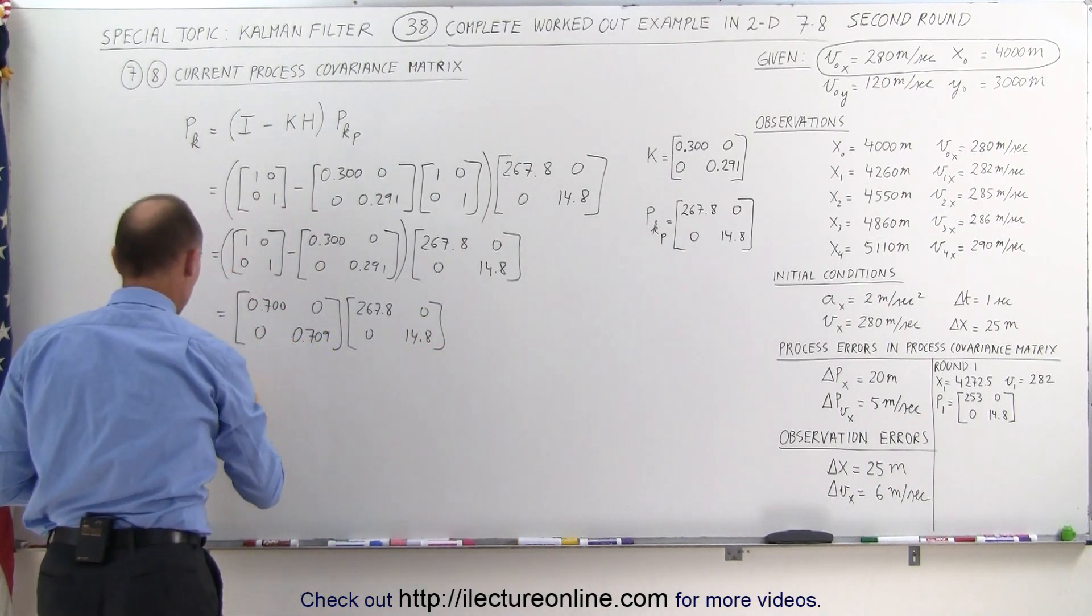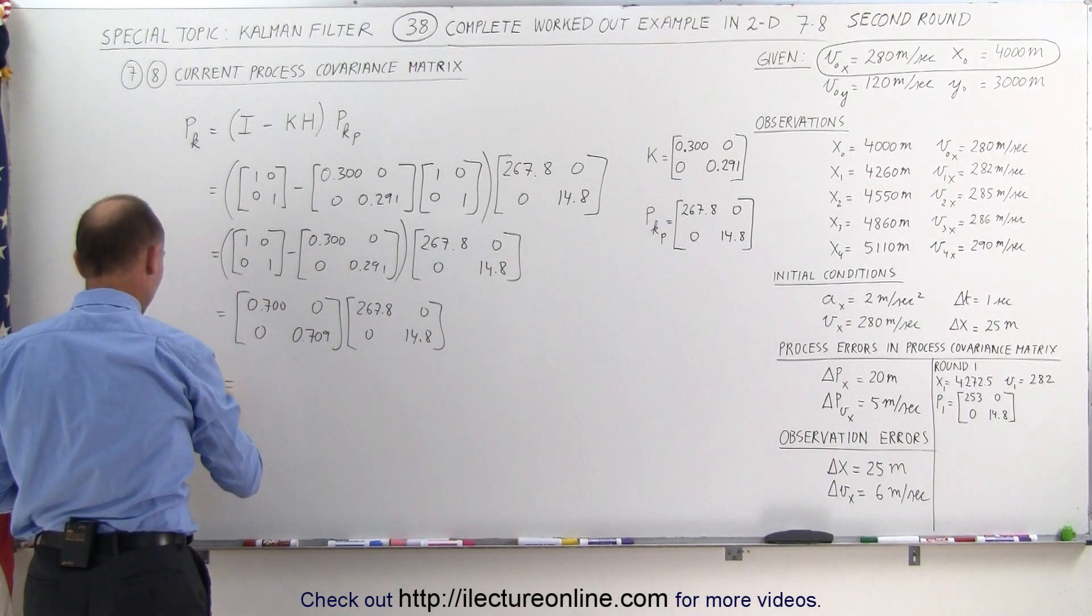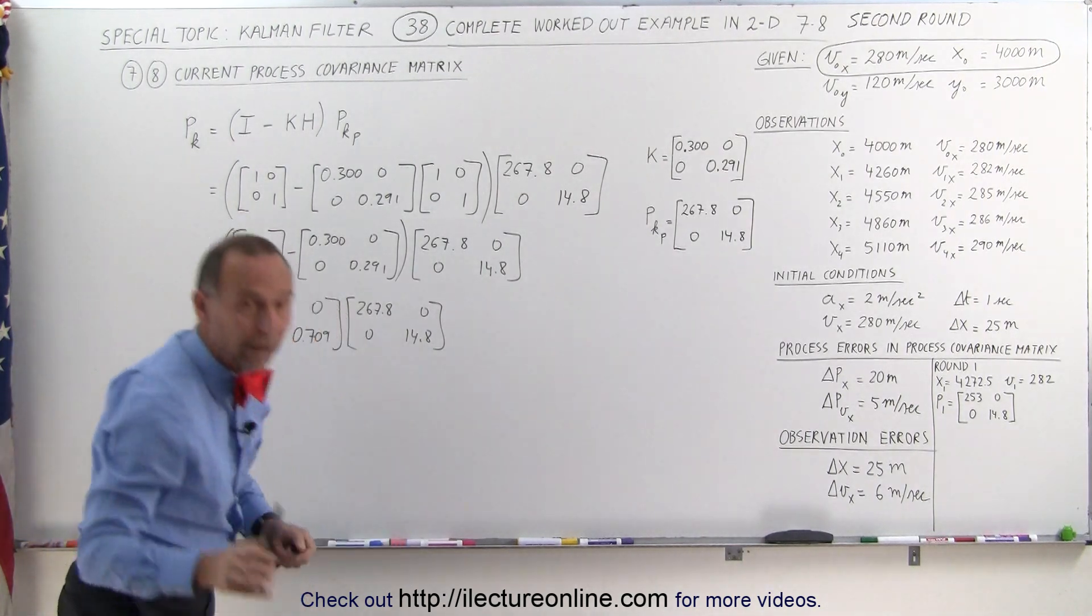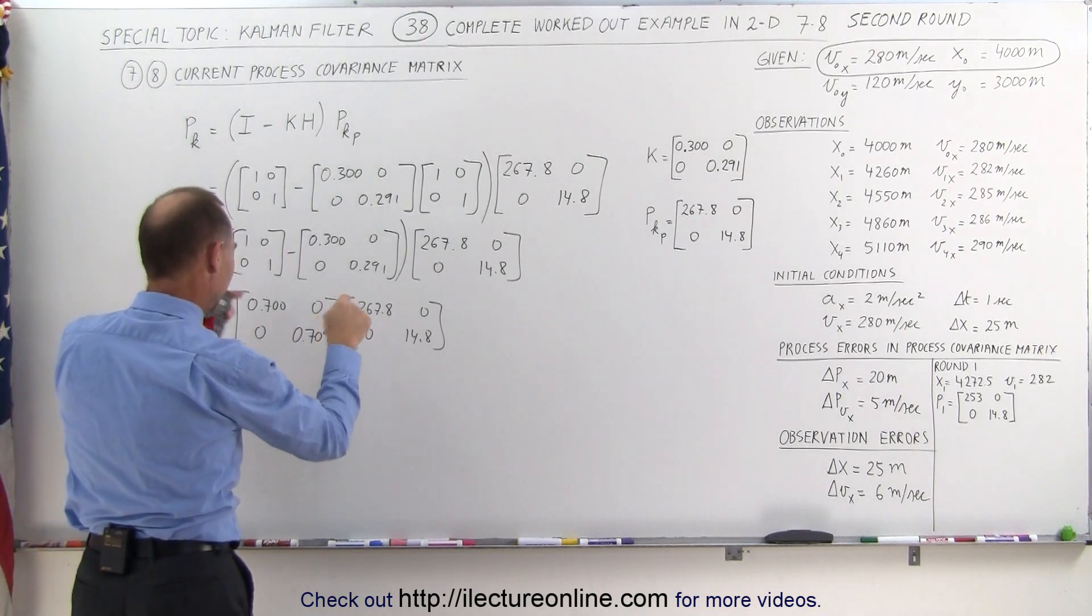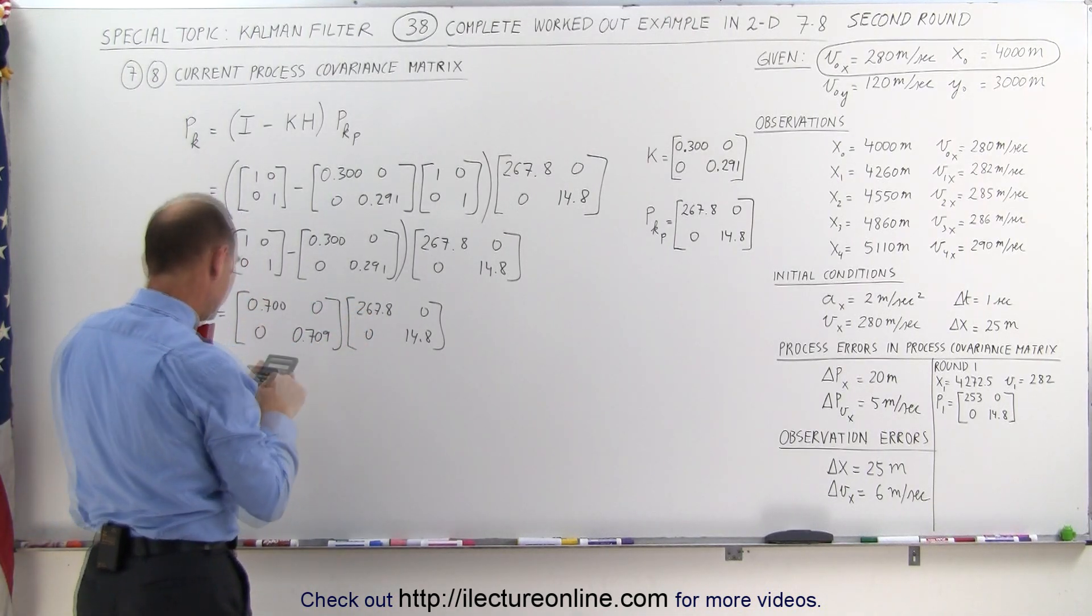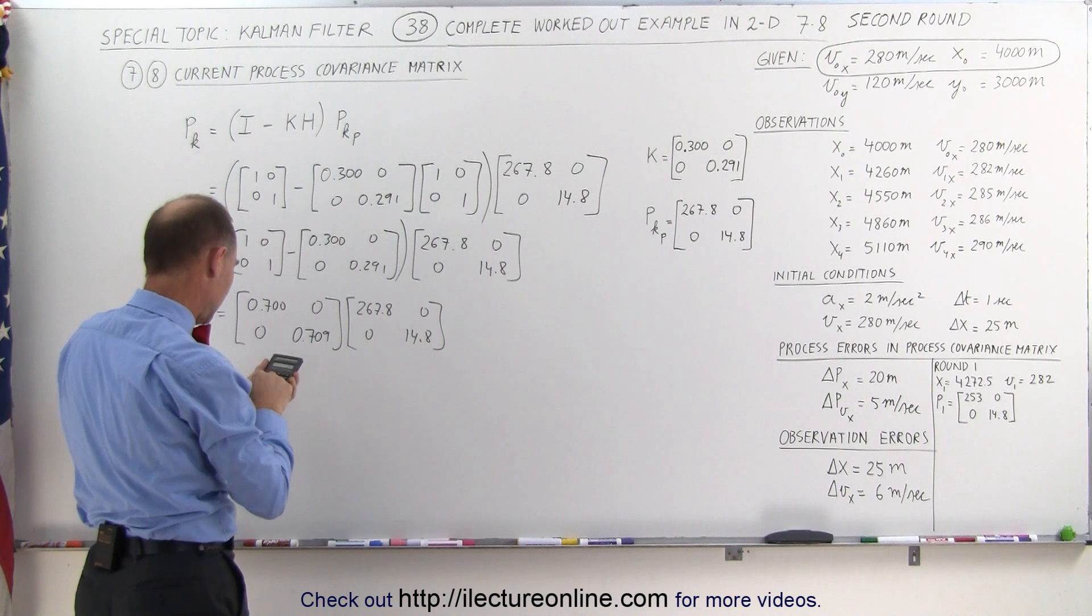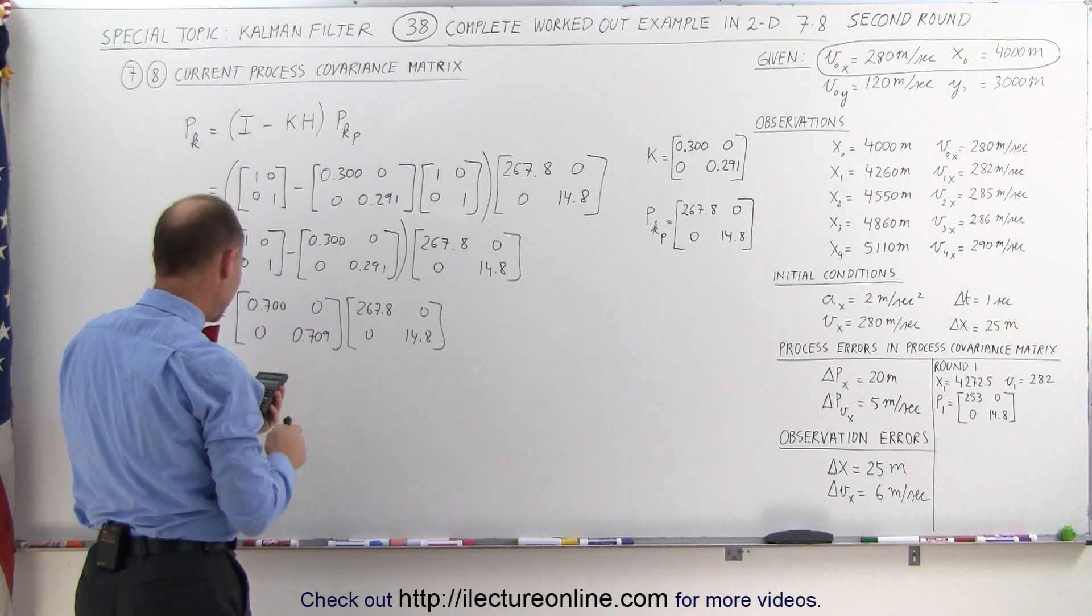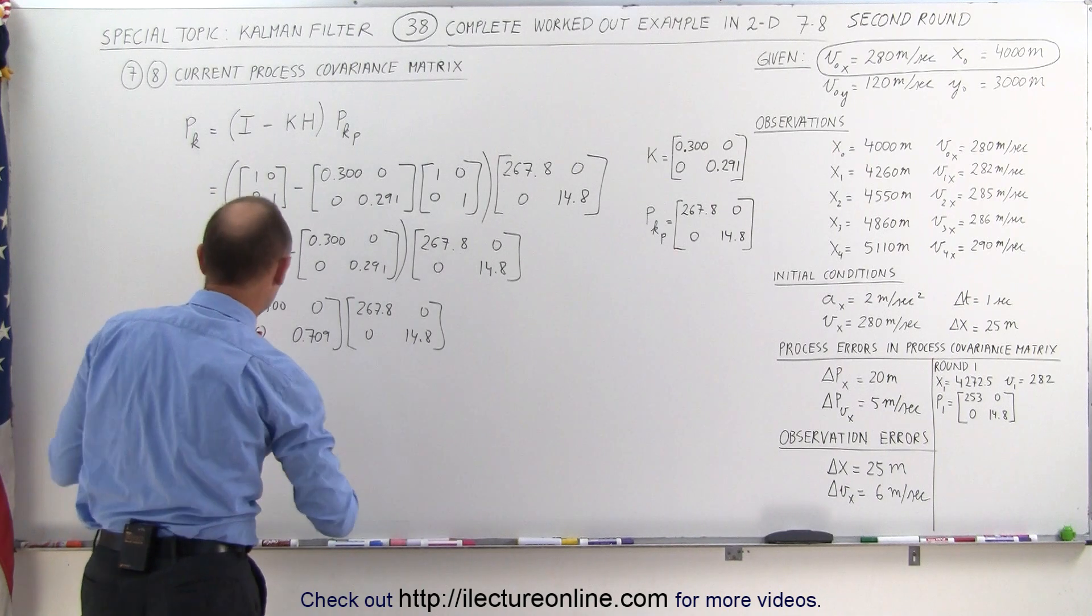And that will give us the new process covariance matrix, the current one for round 2, which will then be carried through to round 3. This times this plus this times this, 0.7 times 267.8 equals, that gives us 187.5, rounded to one decimal place.